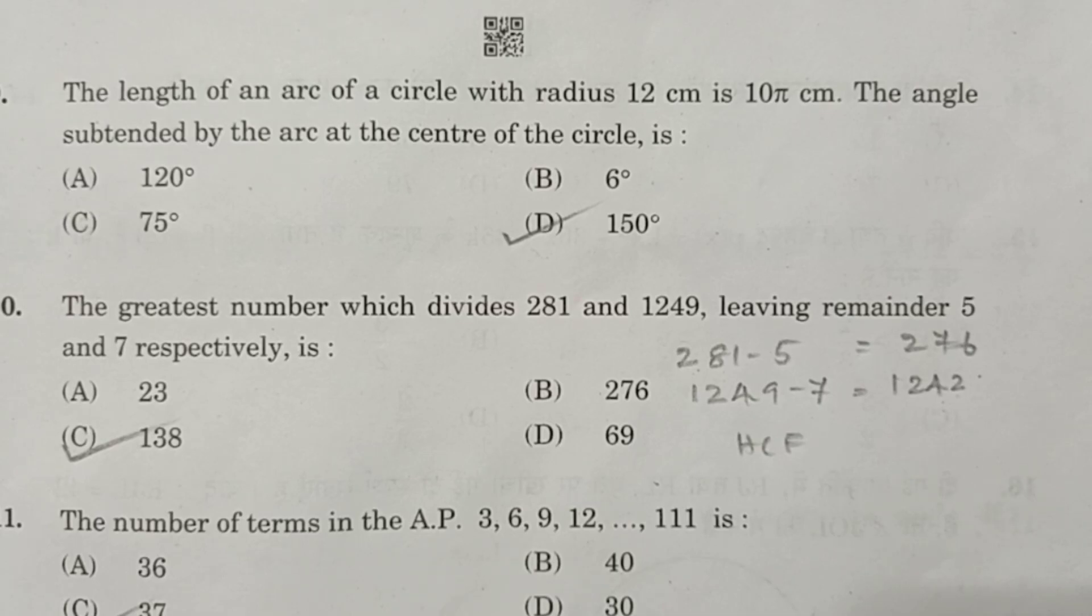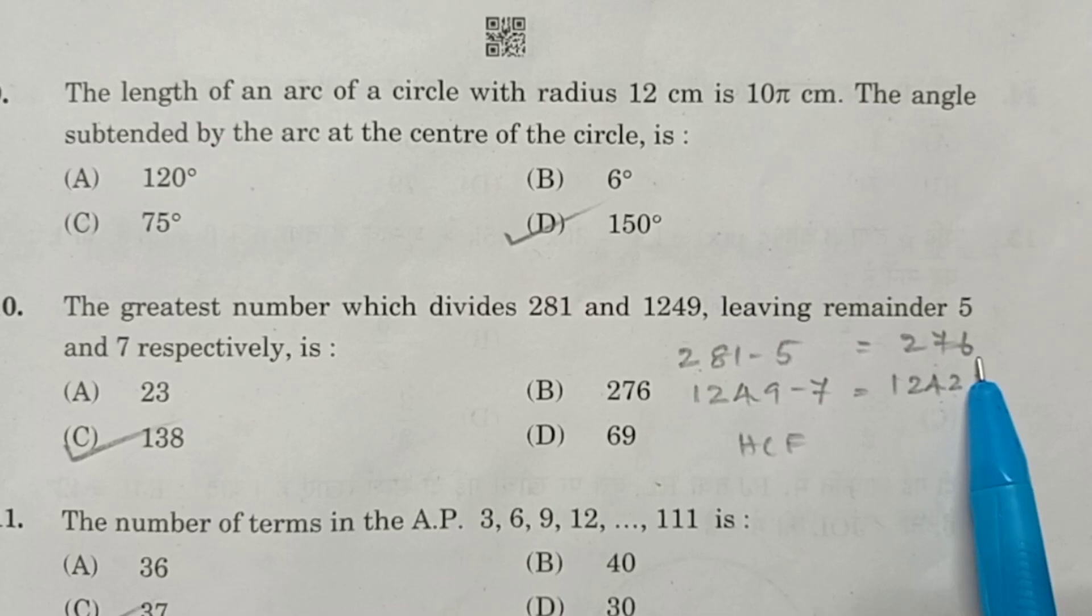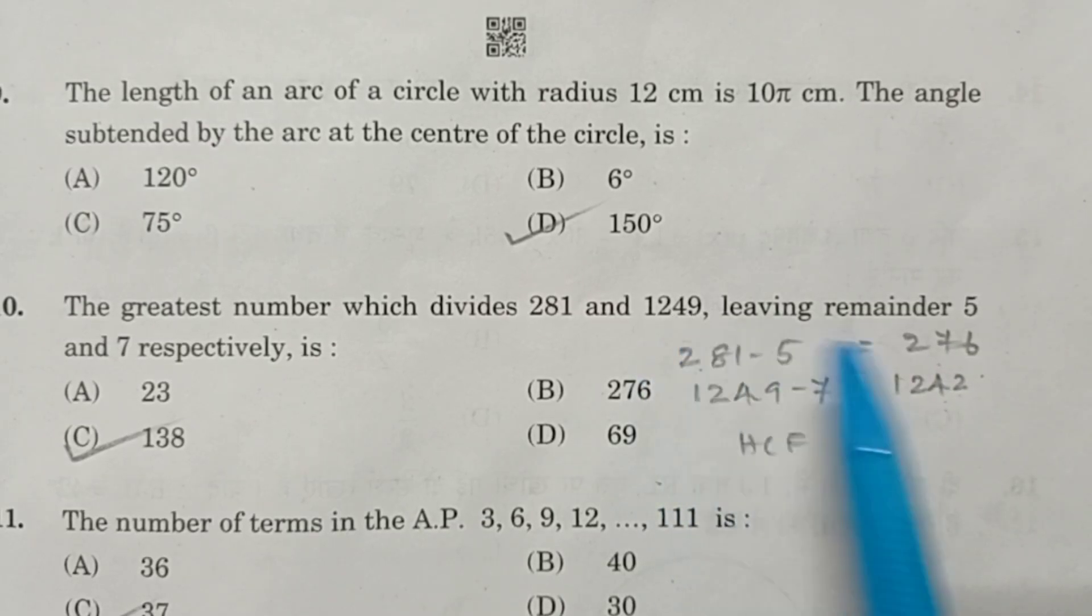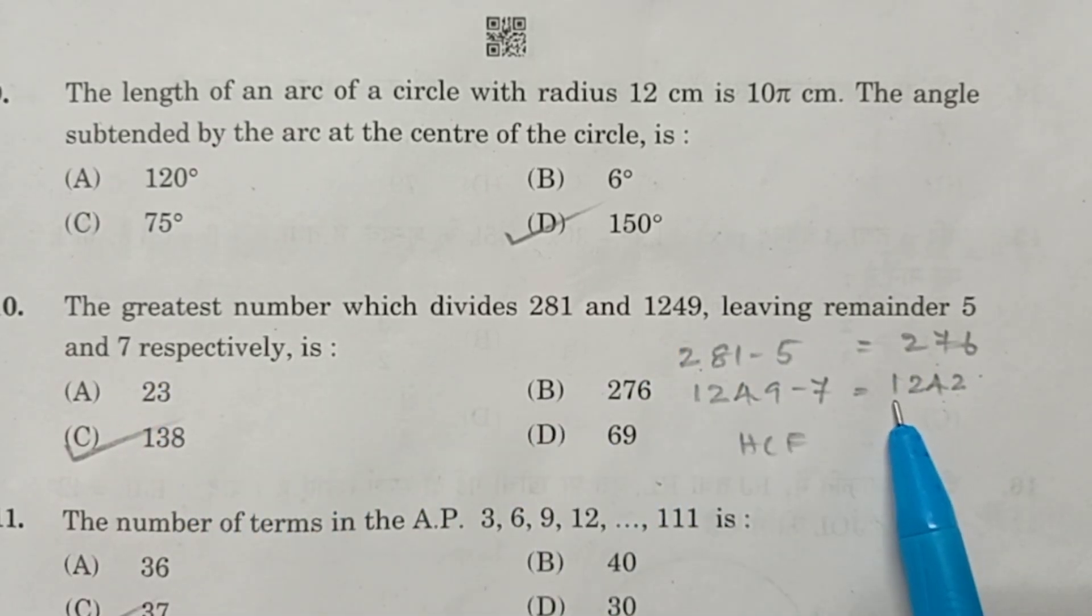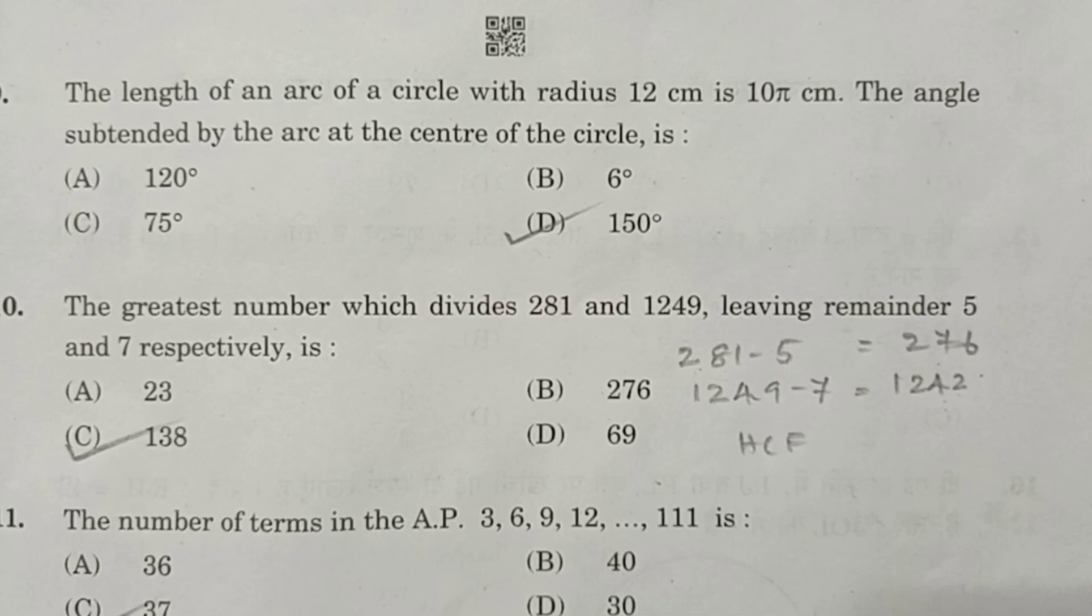Question number 10. The greatest number which divides 281 and 1249, leaving remainders 5 and 7 respectively. First find 281 minus 5, it is 276. 1249 minus 7 is 1242. Find the HCF of these two numbers. The answer is 138.